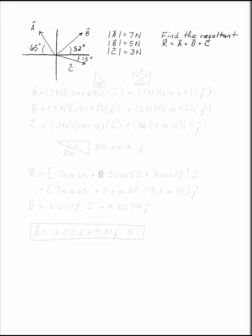Find the resultant R = A + B + C, where A is 7 newtons at 65 degrees above the negative x-axis, B is 5 newtons at 52 degrees above the positive x-axis, and C is 3 newtons below the positive x-axis at 15 degrees.